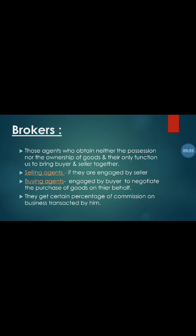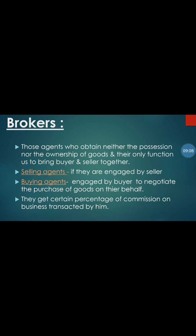The first type of functional middleman is a broker. Brokers are agents who obtain neither the possession nor the ownership of the goods. Their only function is to bring the buyer and seller together. They are called selling agents if engaged by the seller, and buying agents if engaged by the buyer, to negotiate the purchase of goods on their behalf. Brokers get a certain percentage of commission on the business transacted by them.